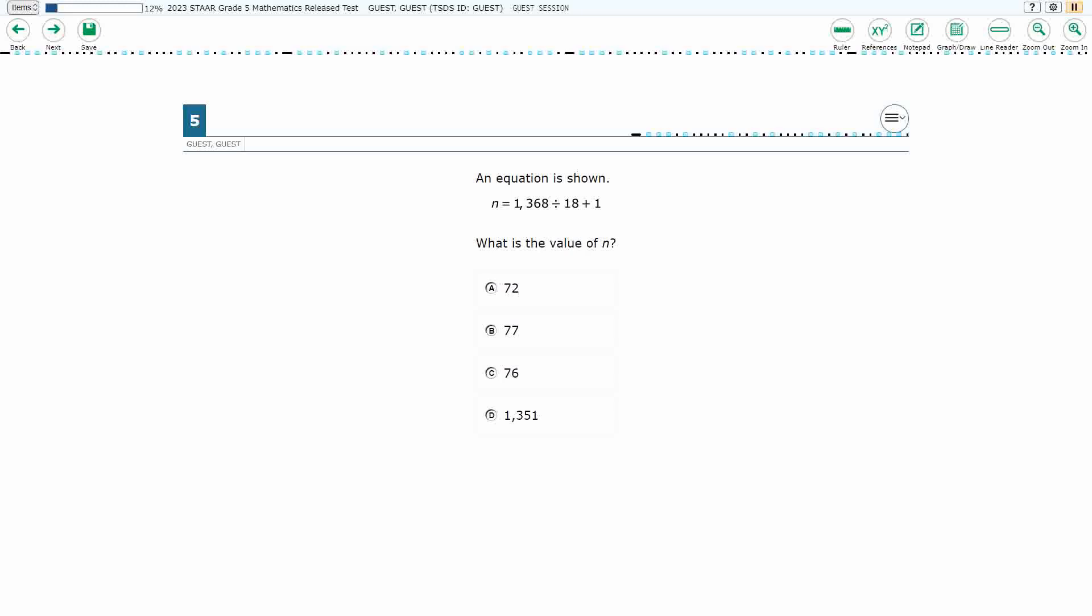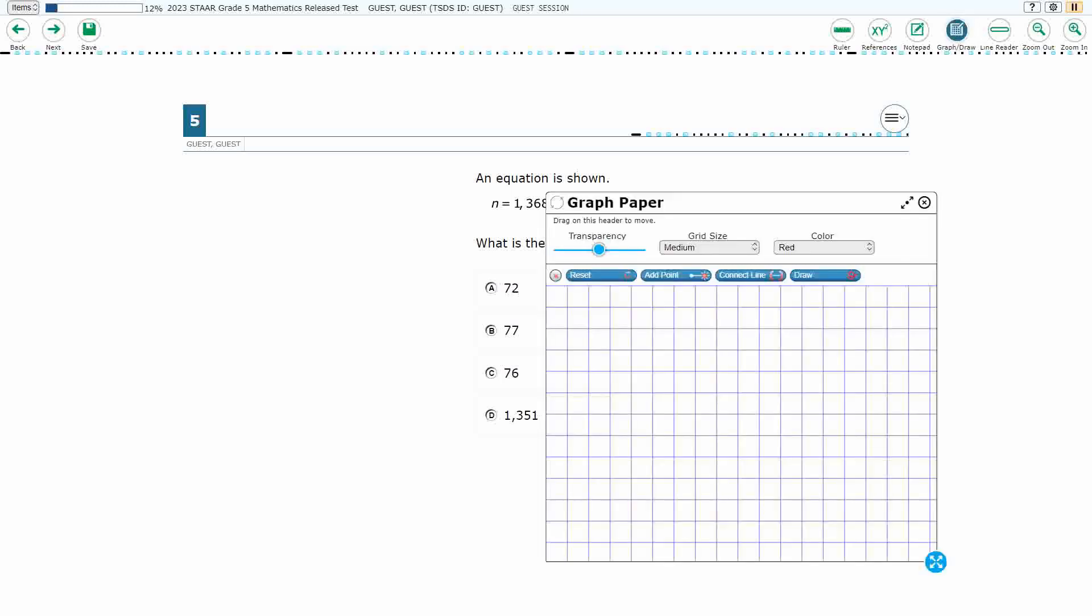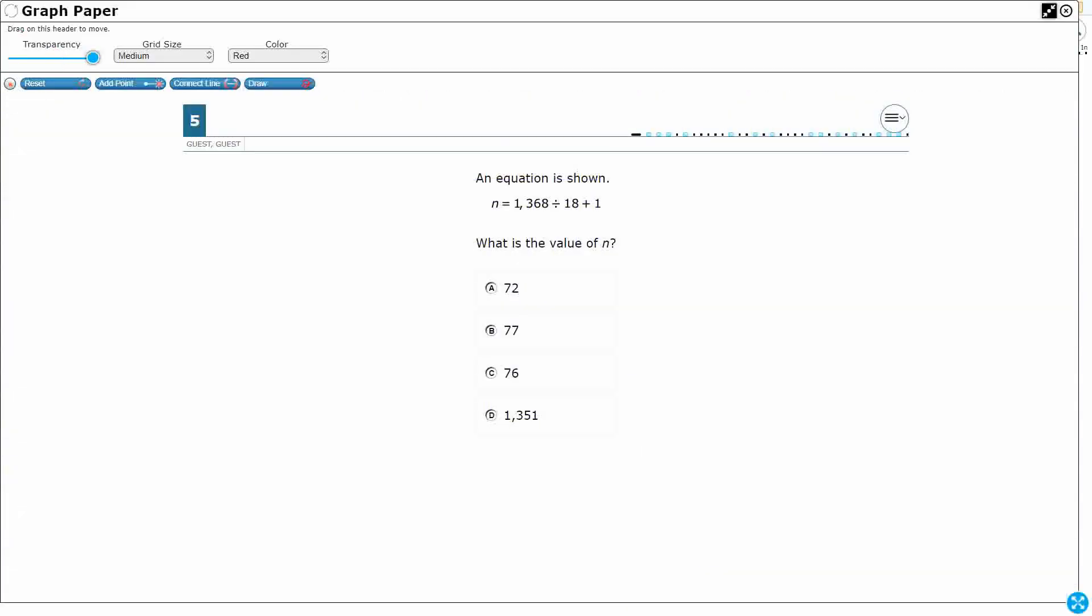All right, so we have got a pretty simple equation here and they're not even asking us to represent it, they just want us to solve it. So that seems pretty simple. N equals, and then I've got a division, I've got an addition. So here's my question, what do I do first?